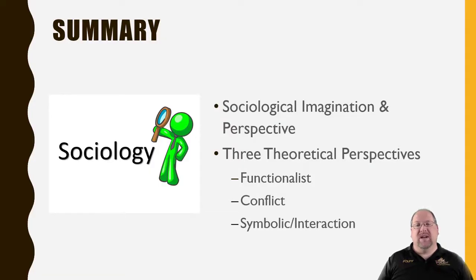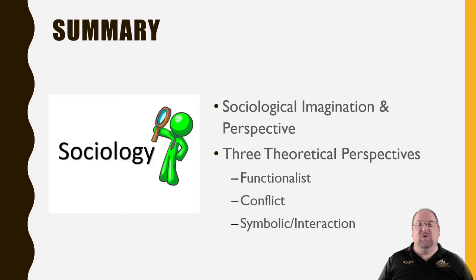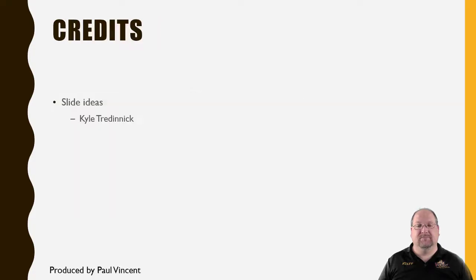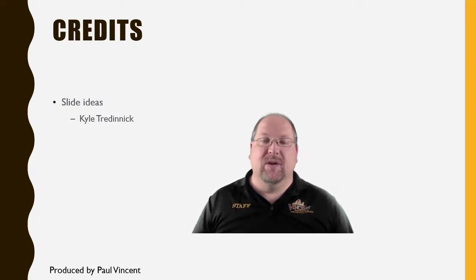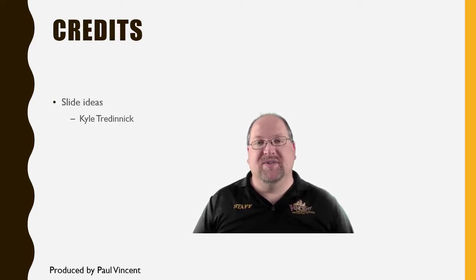As a review, today we looked at the sociological imagination and perspectives, defined the difference between the two, and saw how they are related. We also looked at the three theoretical perspectives sociologists use: the functionalist perspective, the conflict perspective, and the symbolic interactionist perspective. Please review this video, take notes, and make sure you are doing the activities in the textbook and other materials — they provide additional resources, including topics like dramaturgy, that go a little beyond what was covered here.